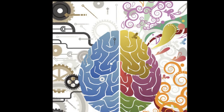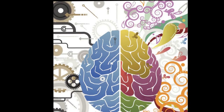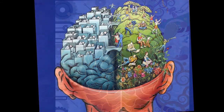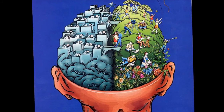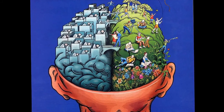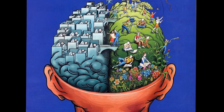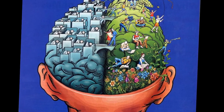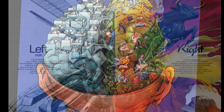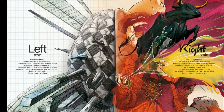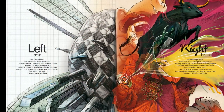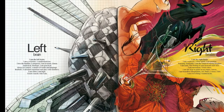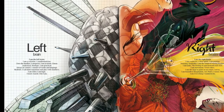The right hemisphere is more aesthetic, dealing with feelings, intuition, color, physical senses, relationships, awareness, rhythm, humor, the left side of the body, and motor skills. The left hemisphere has also been shown to mature faster than the right hemisphere. Note: for left-handers, this information is reversed.